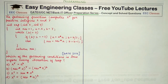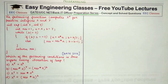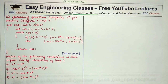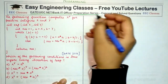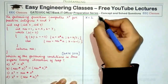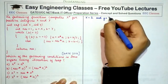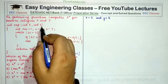In this question you are given a code and told that the following function computes x raised to power y for positive integers x and y. You are asked which of the following conditions is true before every iteration of the loop. You can assume any two values of x and y, check all iterations, and determine which of the four options is true. Let's take x to be 2 and y to be 5.